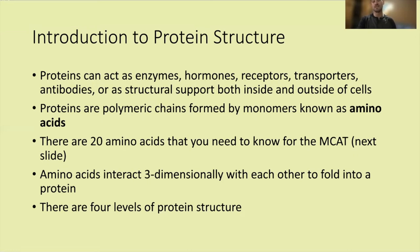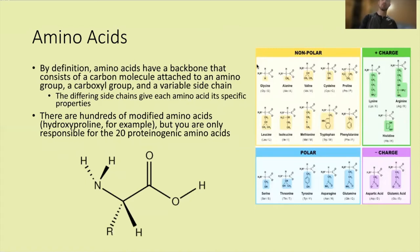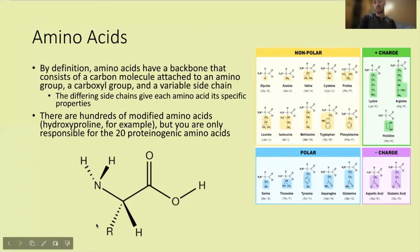Amino acids interact three-dimensionally with each other to fold into a protein, and they're structured in four different levels. By definition, amino acids have a backbone consisting of a carbon molecule — the alpha carbon — attached to an amino group, a carboxyl group, and a variable side chain called the R group. This structure is the same for every amino acid; the only thing that changes is the R group, and these differing R groups give each amino acid its specific properties.